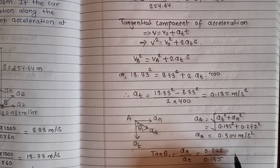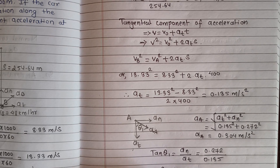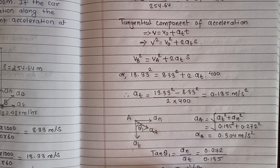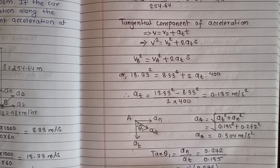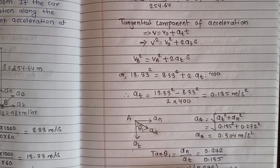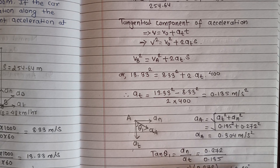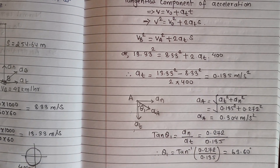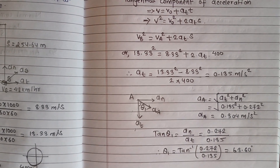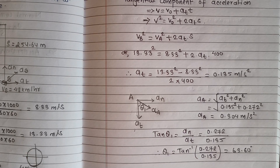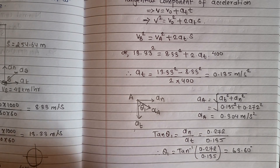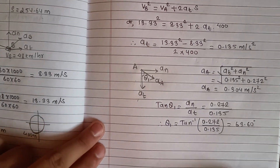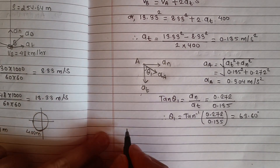The angle θ at point A: θ = tan⁻¹(an / at) = tan⁻¹(0.272 / 0.135), which gives θ = 63.60 degrees.